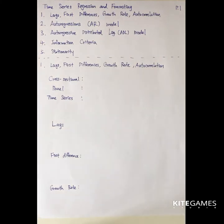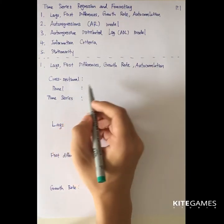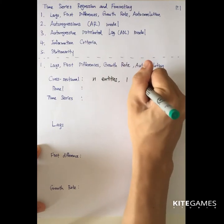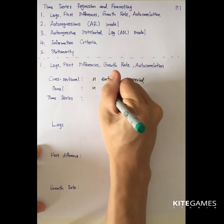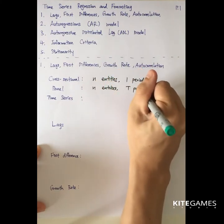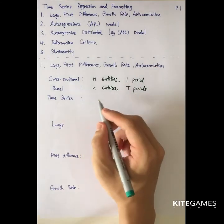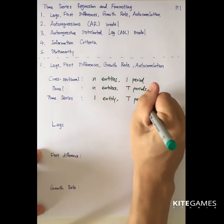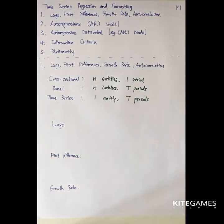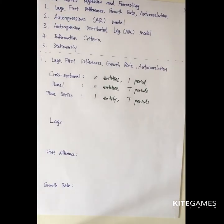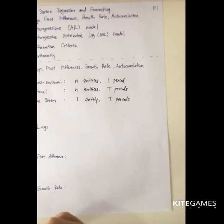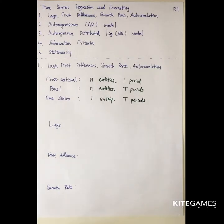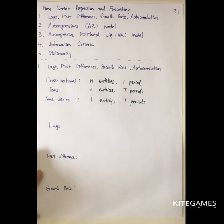First, some terminologies. We have covered cross-sectional data and panel data. Cross-sectional data is the N entities and one period case. Panel data covers N entities for T periods. Time series econometrics focuses on one entity with T periods. You may think time series is easier since it covers only one entity, but the answer is no — because in time series you can go very deep, so it involves much more analysis.